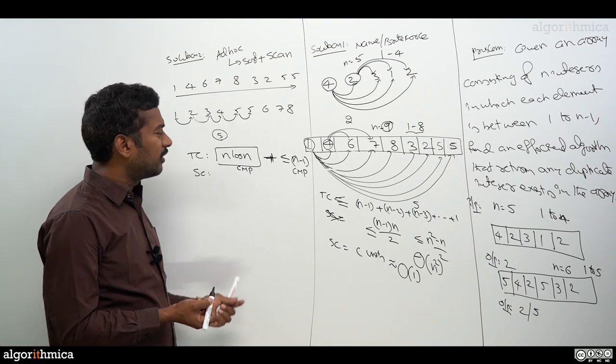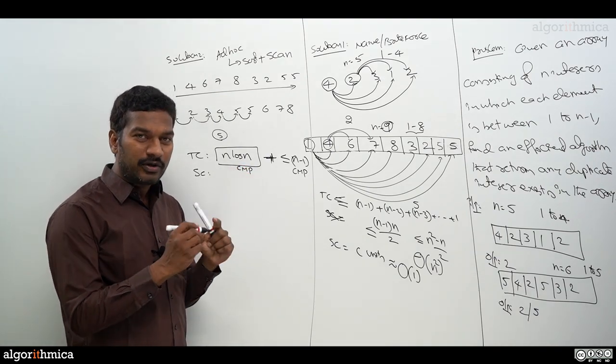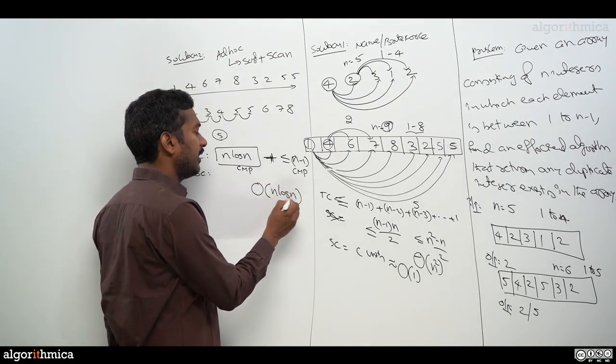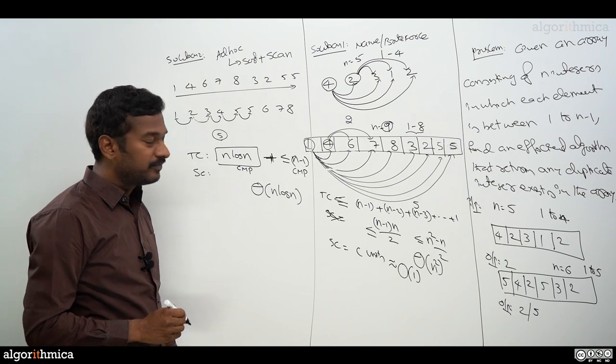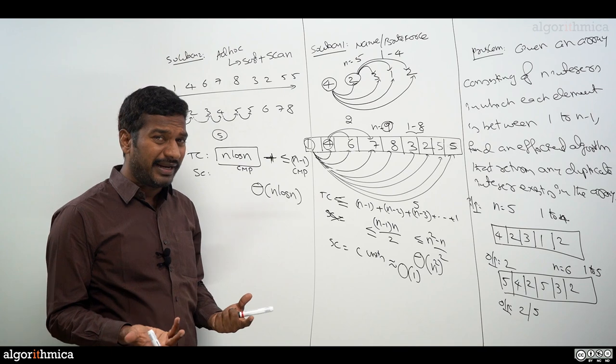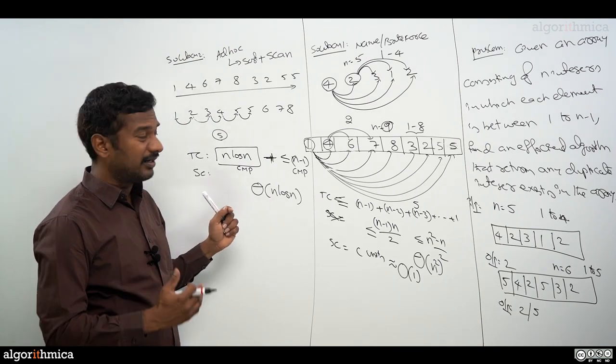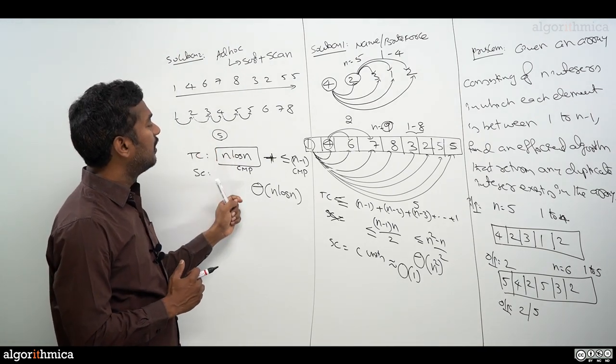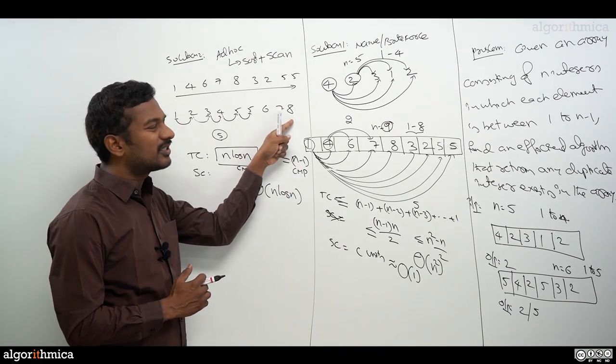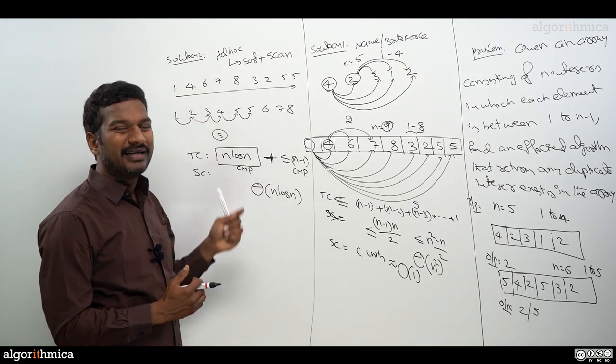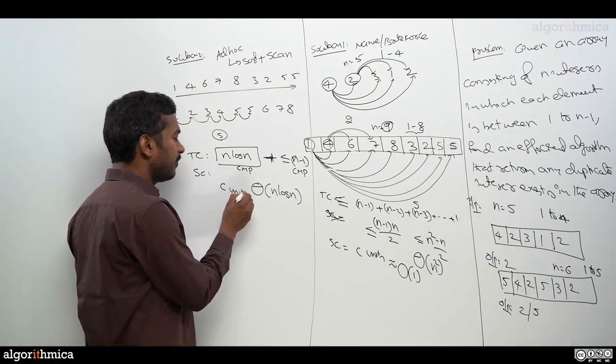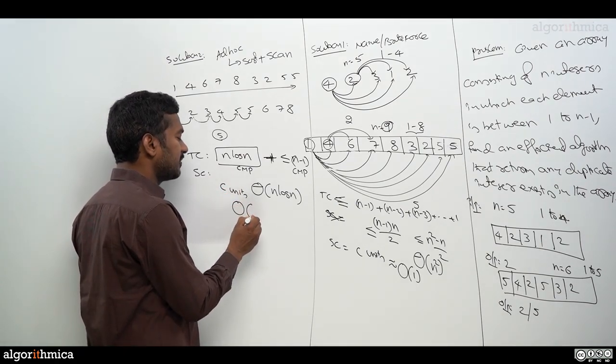Overall, from previous videos, how do we express this? Definitely big O of n log n here, and we can also write this as theta. Now space complexity: to express this idea, sorting we can do without extra space. Again, we'll see in later videos this idea of space complexity. For doing the so-called adjacent checks, we need just one scan through, maybe adjacent elements with constant variables. That's why we write it as C units, which we call big O of one.